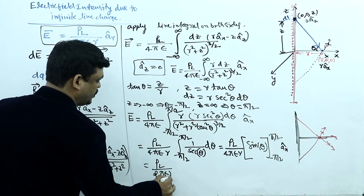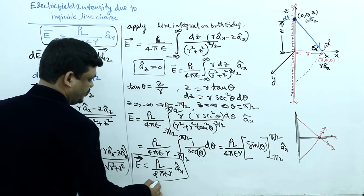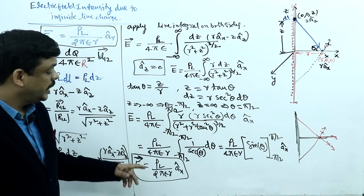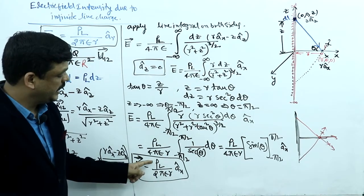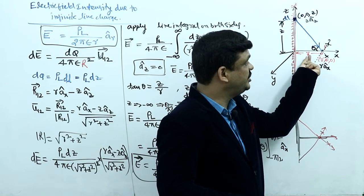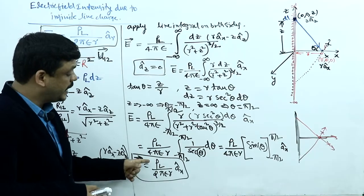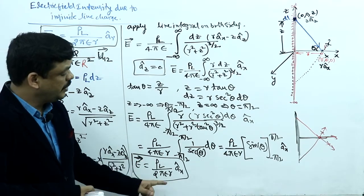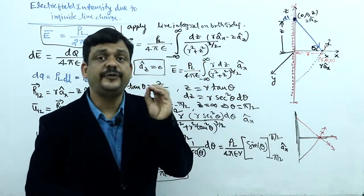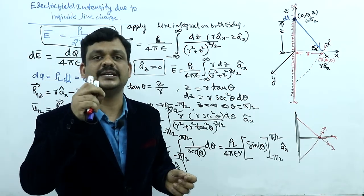Finally, E = ρL / (2πεr) · ax. This is the electric field intensity due to infinite line charge. Here ρL is the line charge density and r is the distance from the line charge to the point. As distance increases, E decreases — they are inversely proportional. As line charge density increases, E increases.